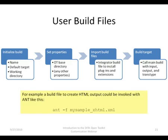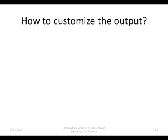Here is an example of how to invoke a build process for HTML output. A user build file builds an output deliverable. You can create standard out-of-the-box output, or create your own output by customizing one of the standard outputs of the Open Toolkit, or create completely new types of output. Let's see how you can customize the output.